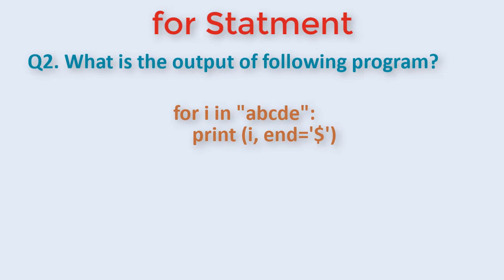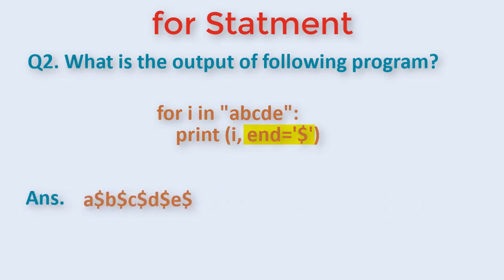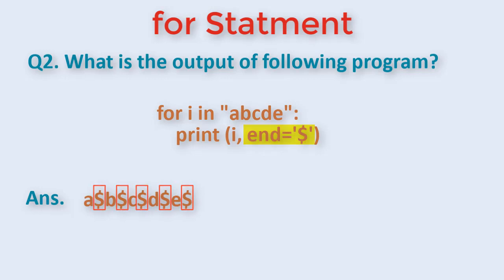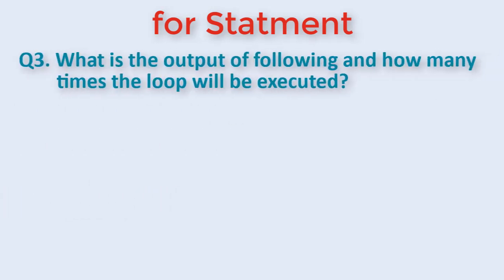Another type of question that can be asked is to predict the output. For example, during each iteration of the loop, i takes on the value of a, b, c, d, and e. Since end is specified as $, during each iteration it will print the value of i followed by $ in the same line and so on.